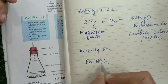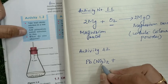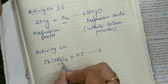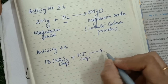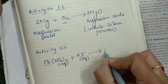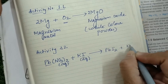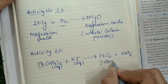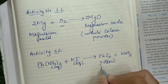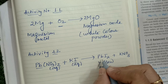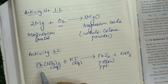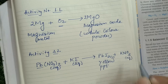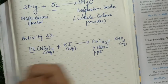Activity 1.2: lead nitrate plus potassium iodide — both are aqueous solutions. The Pb and I combination gives PbI2 (lead iodide) plus KNO3 (potassium nitrate). PbI2 is a yellow color lead compound and forms as a yellow precipitate. When lead nitrate reacts with potassium iodide, PbI2 solid is formed and KNO3 remains in solution. A yellow color compound — lead iodide — is formed in the test tube.